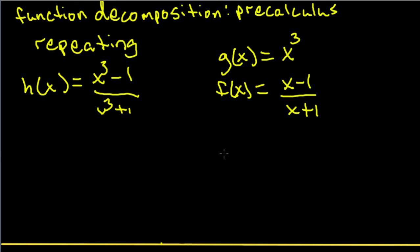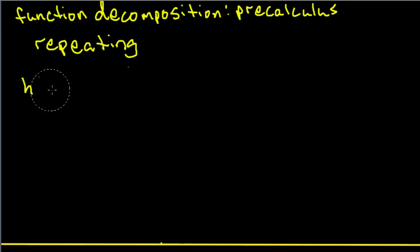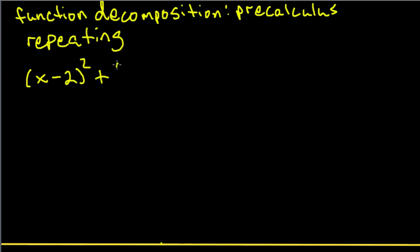So let's work on another example. So that was with what I call repeating. Actually, let's look at another repeating one just to, because this is the one you'll see most often. And here's another example. So we'll have x minus 2 squared plus x minus 2 plus 3. And this is that function, h(x).